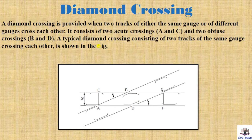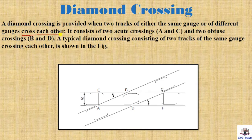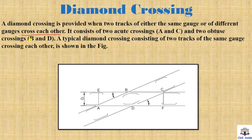Next comes diamond crossing. A diamond crossing is provided when two tracks of either the same gauge or different gauges cross each other. It consists of two acute crossings — A and C — and two obtuse crossings — B and D — forming the characteristic diamond shape.